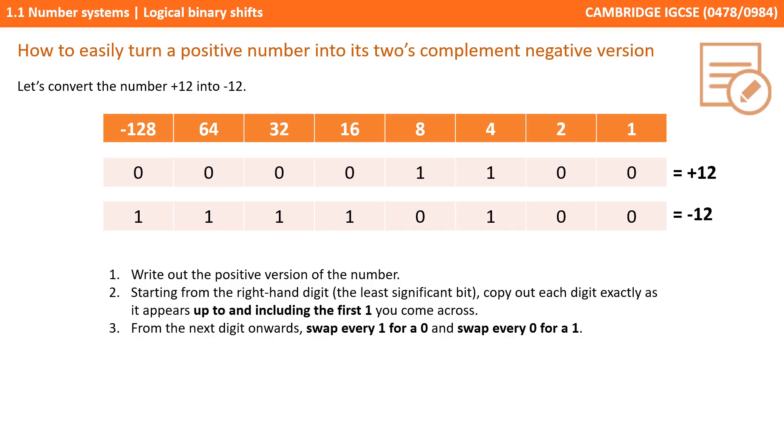Now in a video coming up in this series, we're going to show you how to add two binary numbers together. Once you've watched that video, you'll be able to prove to yourself that what you've got on the screen here is correct. Of course, as you know, if you add plus 12 to minus 12, you should end up with 0. And indeed, if you perform addition on these two numbers, you will end up with a row of 8 zeros. Give that a go once you've watched the video.